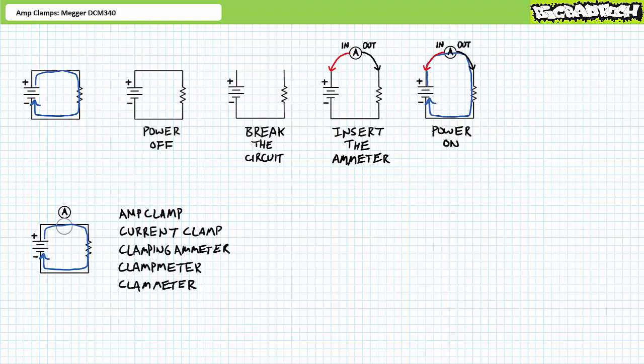This device is known as an amp clamp, otherwise known as a current clamp, a clamping ammeter, a clamp meter, or a clam meter. I have special affection for the name amp clamp because it sounds super cool, but be aware of different industries calling it different things.